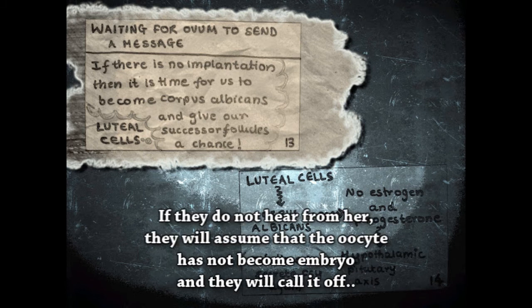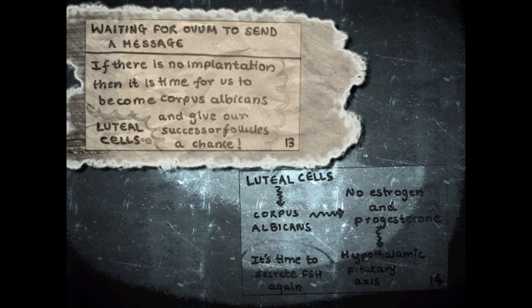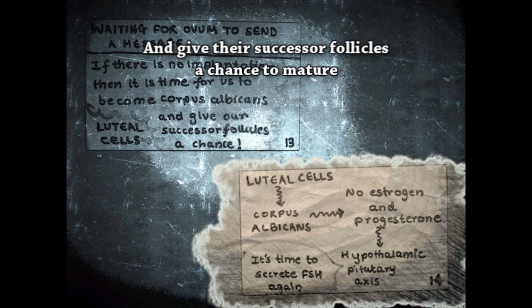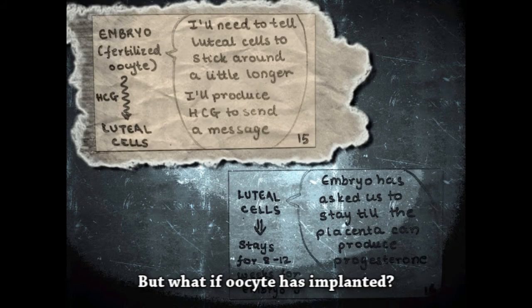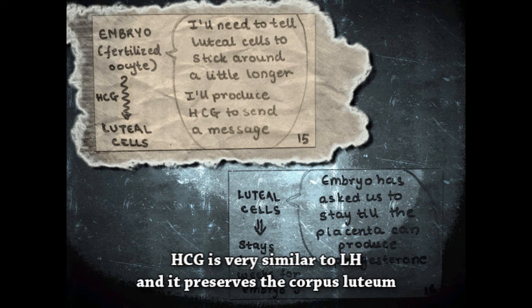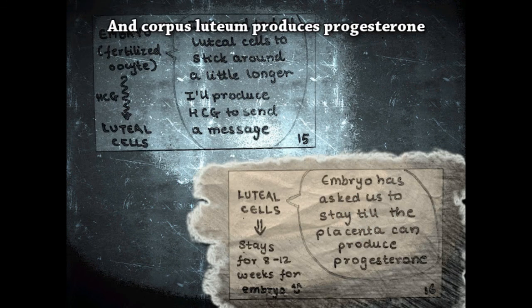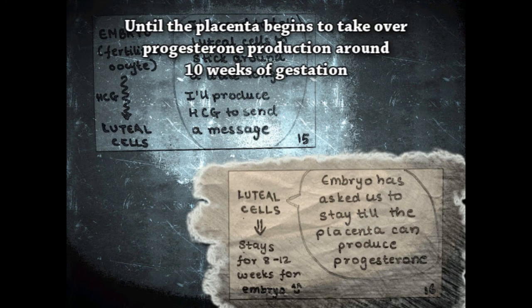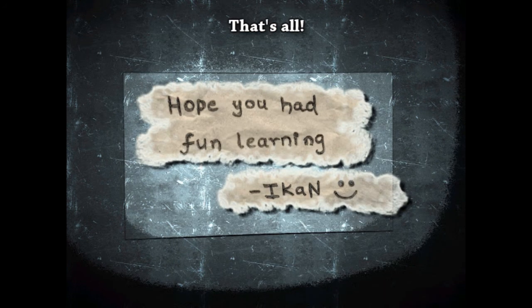The luteal cells are waiting for the ovum to send a message. If they do not hear from her, they will assume the oocyte has not become an embryo and will allow subsequent follicles a chance to mature. But if the oocyte has implanted, she will produce hCG, and hCG will tell the luteal cells to stick around a little longer. hCG is very similar to LH — it preserves the corpus luteum, and the corpus luteum produces progesterone until the placenta begins to take over progesterone production around 10 weeks of gestation.